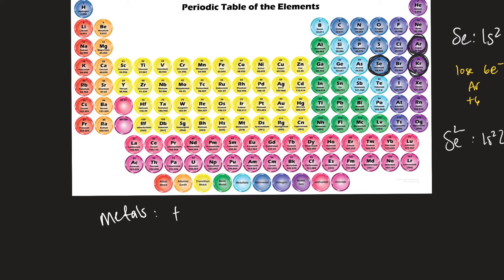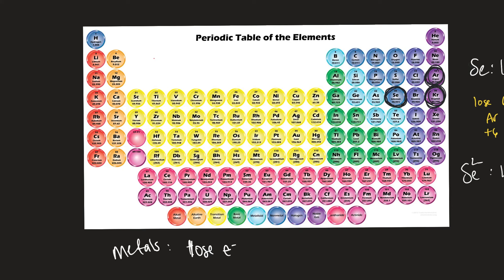There are a couple of trends to point out. Metals will typically lose electrons — sodium and aluminum are both metals. It makes sense when you think about placement on the periodic table: metals on the left have one, two, or three valence electrons, so it's easier to lose those few electrons than to gain six or more.